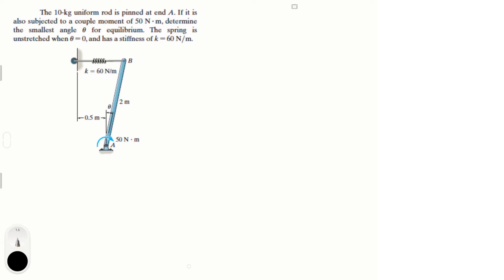Drawing the free body diagram: at the halfway point we have the weight, equal to 10 kg times 9.81, which is 98.1 N. Then you have this force at B — this line here is also at angle theta. We have the moment of 50 N·m, and that's our free body diagram.